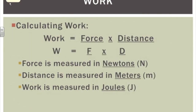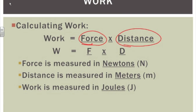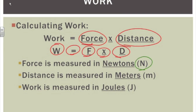We can calculate a numerical value for work. Work is calculated by taking force and multiplying it by distance: W equals F times D — work equals force times distance. Force is measured in newtons, distance is measured in meters, and work is measured in a unit called a joule, abbreviated with a capital J.